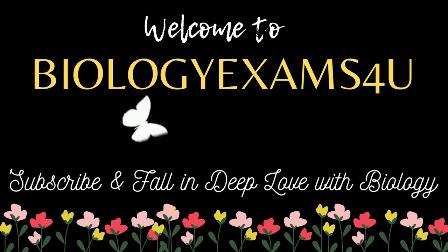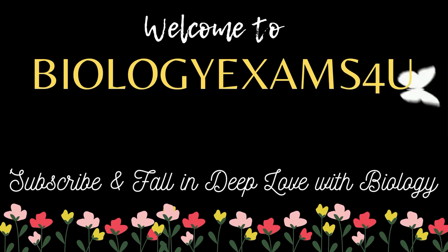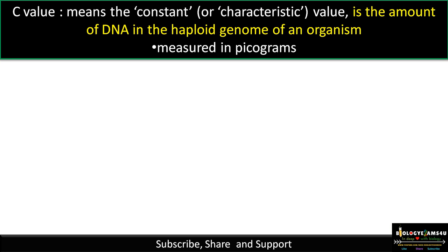Welcome to biology exams4u.com. Today we have a very interesting topic: why onion has more DNA than humans. Let's begin with the definition of C value. C value means constant or characteristic value — it is the amount of DNA present in the haploid genome of an organism, designated as 1c, and is measured in picograms.